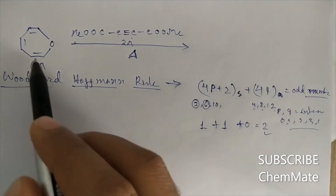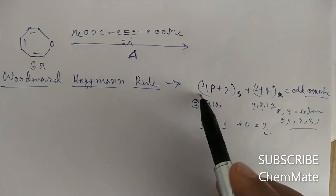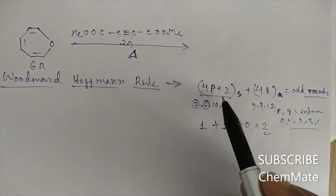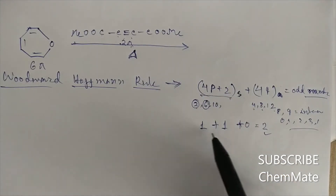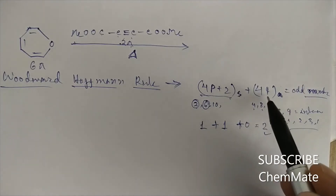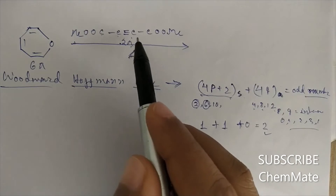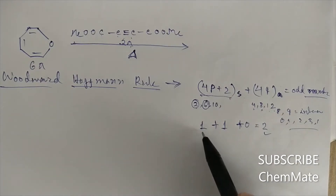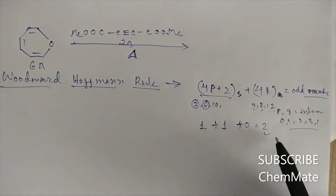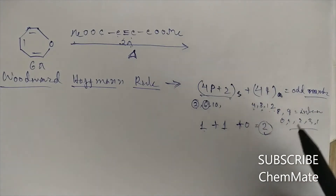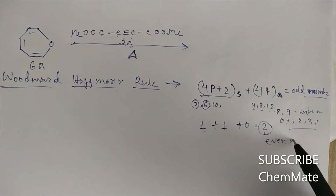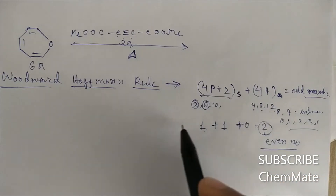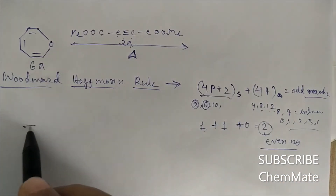The 6π component is a 4p+2 system and the 2π component is also a 4p+2 system, so the count is 1 plus 1 equals 2. There are no 4q components since no component has 4, 8, or 12 electrons. Total equals 2, which is an even number, so this reaction is not possible under thermal conditions.